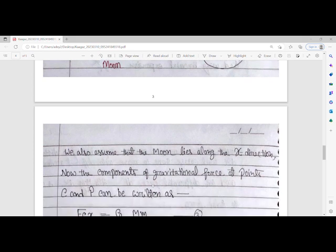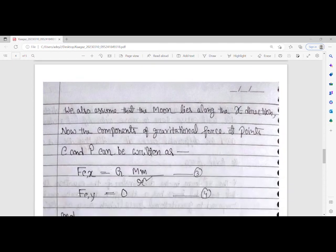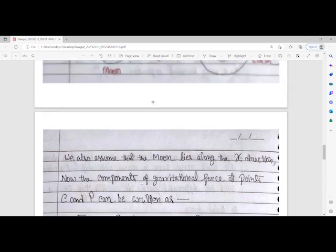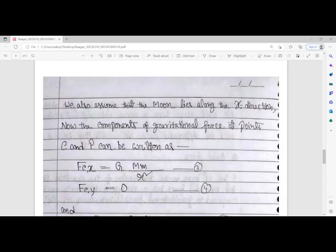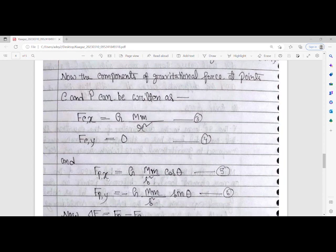We also assume that the moon lies along the x direction. The components of gravitational force at point C, which is completely along the x direction, equals GMm/r². There's no component along the y-axis, so the component of force along y-axis is zero.